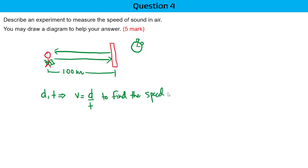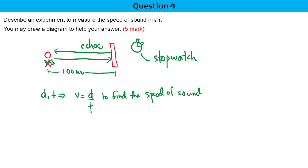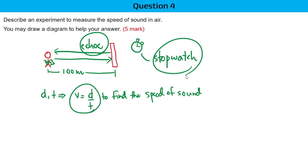That's how you can answer this question to full marks. Since it is worth five marks, please draw a diagram and mention that you should be using a stopwatch. Key words you need to mention: use a stopwatch, listen for the echo, and use this equation. If you include all of it, you should get around five marks.